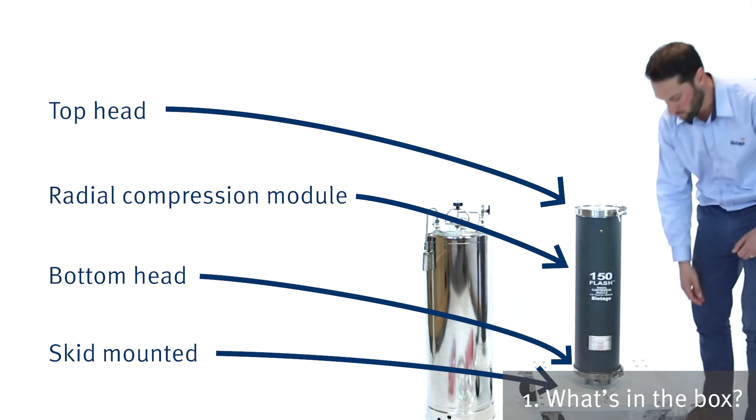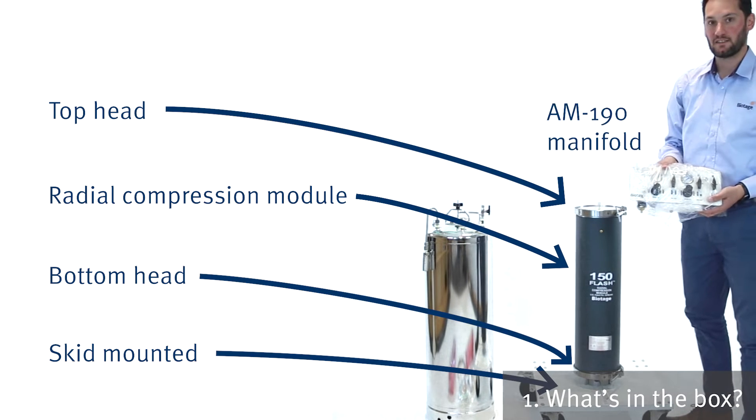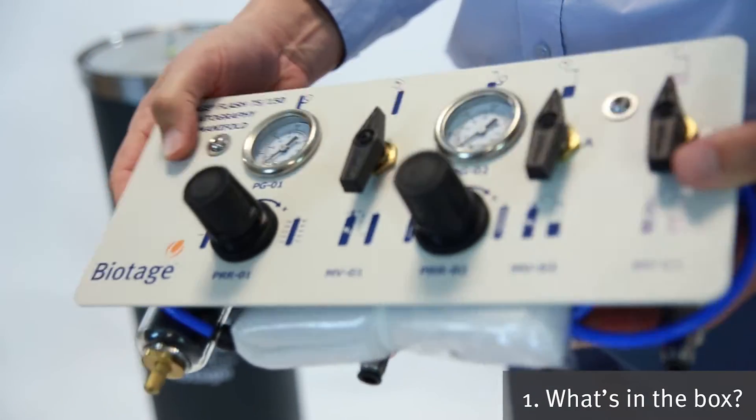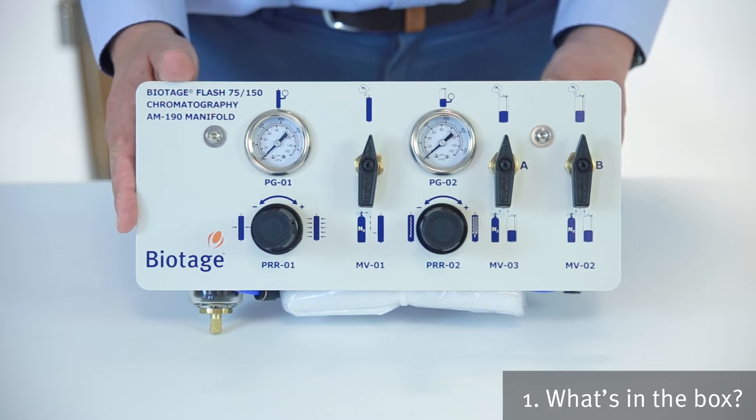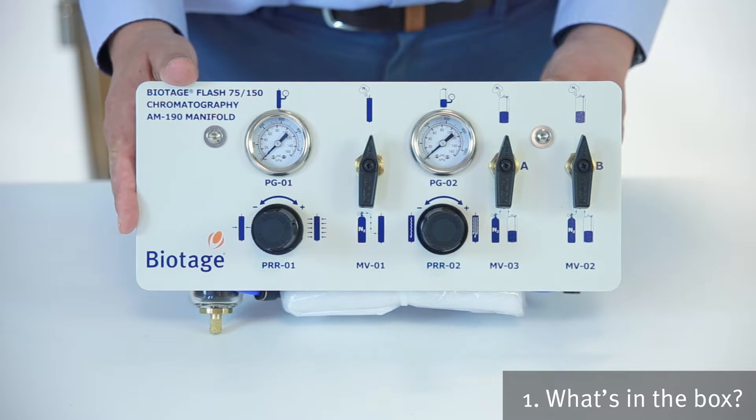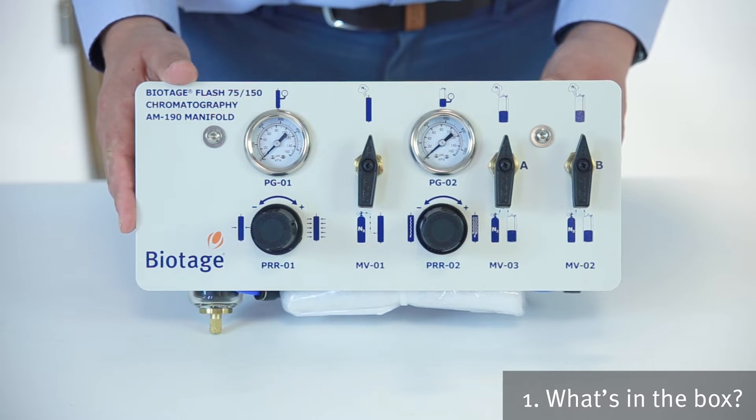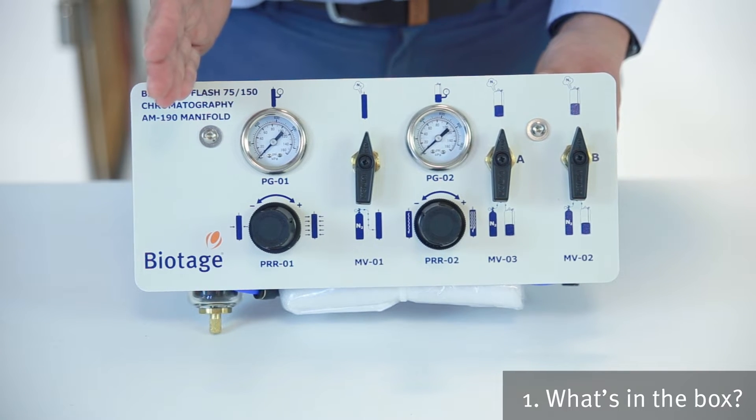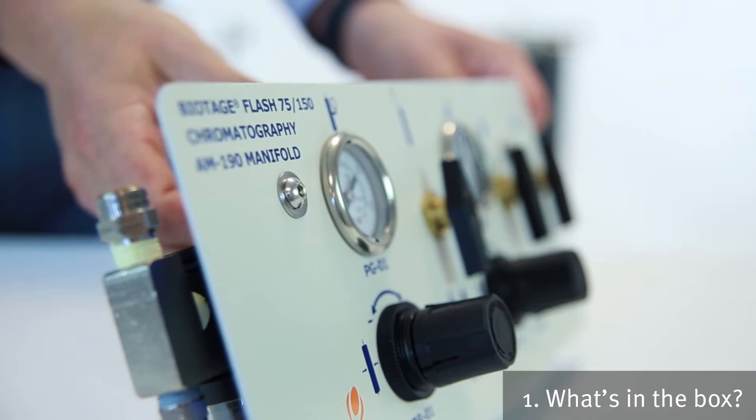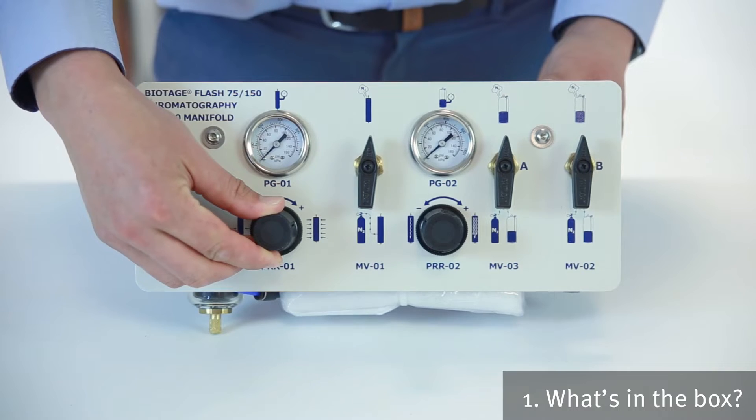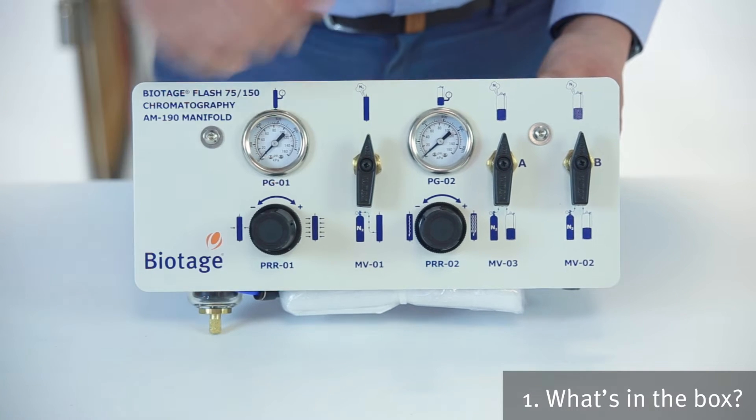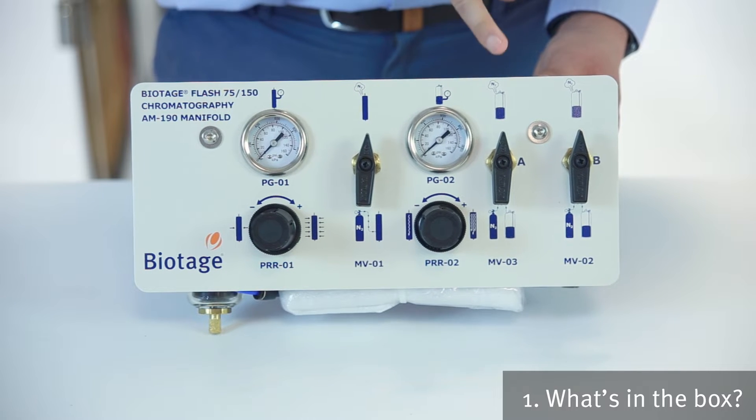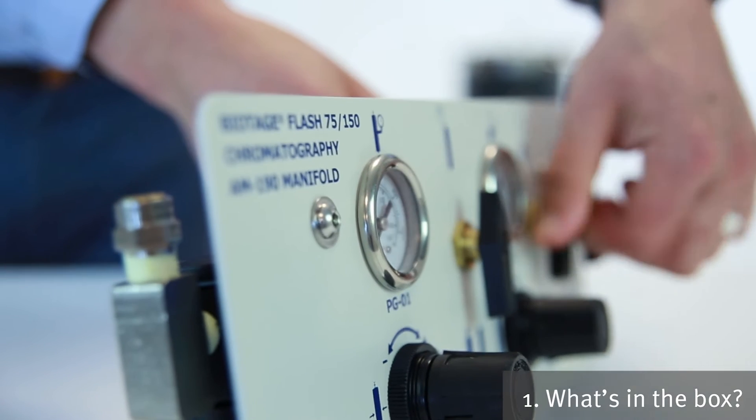All of that's controlled by the AM190 manifold. This is the manifold which is used to control all the various gas pressures. Setting the system up working from left to right across this way. This valve here is setting the overall pressure on the system and we set the pressure for the radial compression module, and then you've got two solvent lines here which are controlled with this valve.